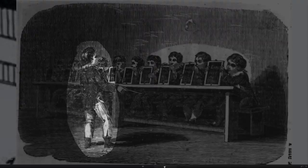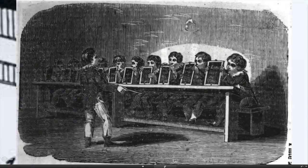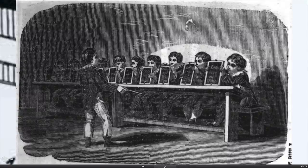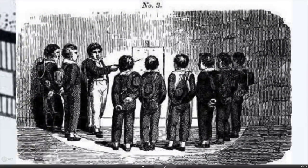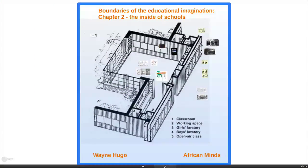Instead, you use older kids as monitors. Children in a given grade would be instructed to write something on a slate, then all hold it up. The monitor would check whether it was correct, correct those who were wrong, and they'd rub it out and continue. To explain something, kids of that specific grade would gather around the monitor at the side, receive instruction, then return to their desks in a highly ordered way to do the work.